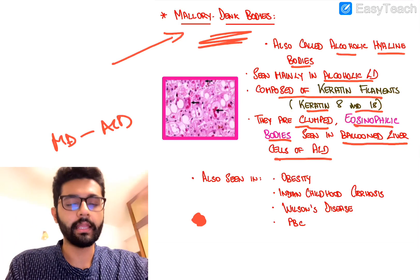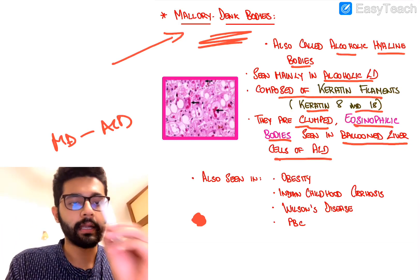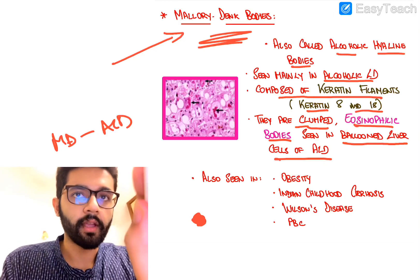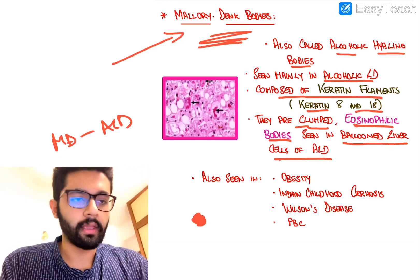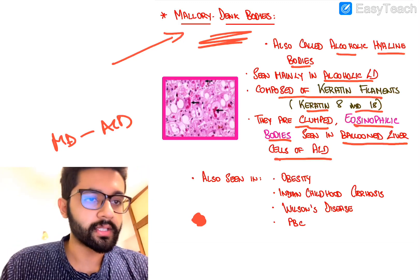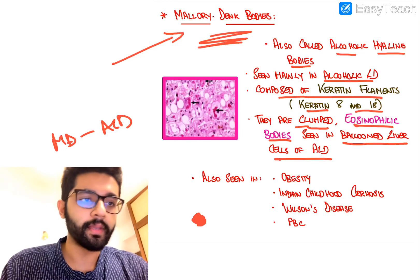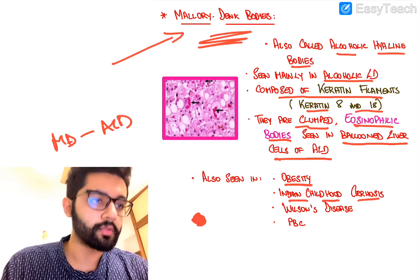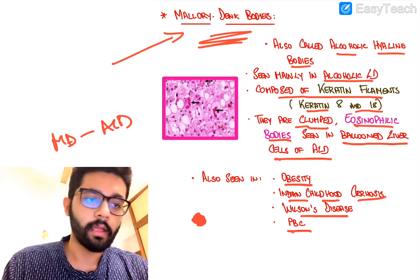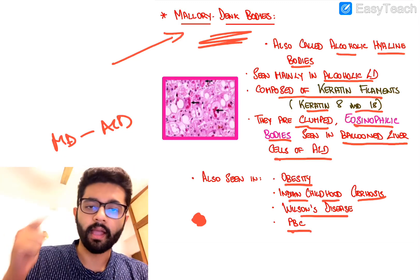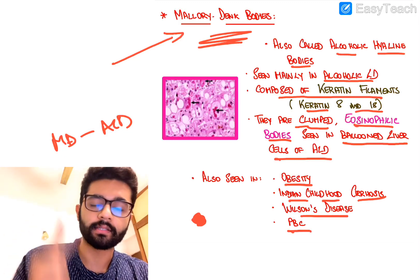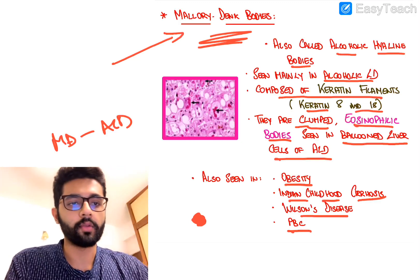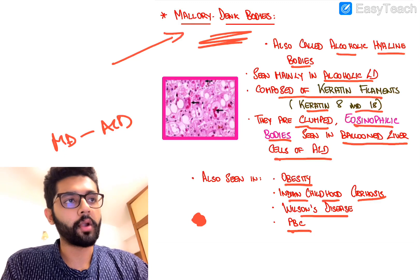Remember: ALD — alcoholic liver disease — Mallory-Denk bodies. A little trivia for AIIMS exams and all central institute exams: Mallory-Denk bodies can also be seen in obesity, Indian childhood cirrhosis, Wilson's disease, and primary biliary cirrhosis. These are a few other conditions where you can see Mallory-Denk bodies.